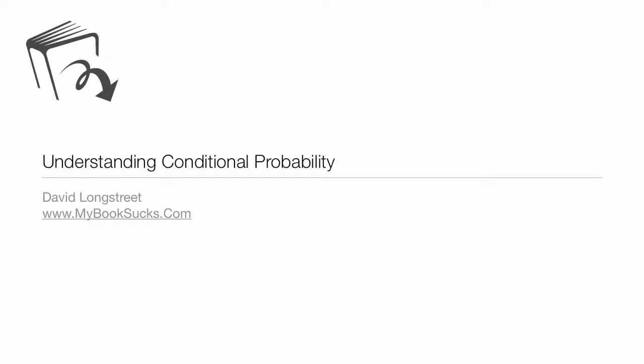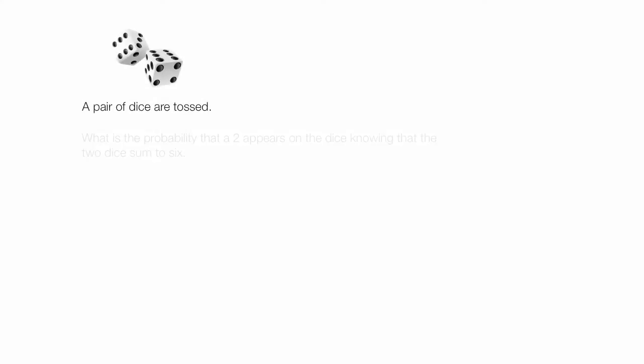In this tutorial, I'm going to discuss conditional probability using some dice. The problem I'm going to do is: a pair of dice is tossed. What is the probability that a 2 appears on the dice knowing that the two dice sum to 6?